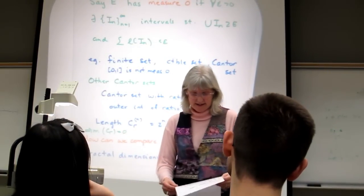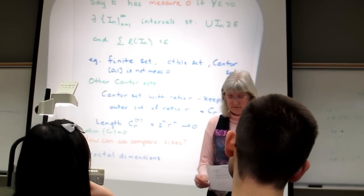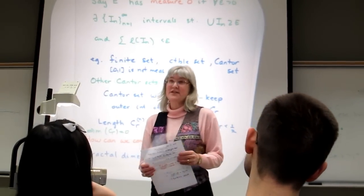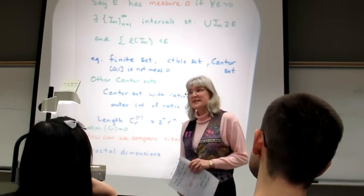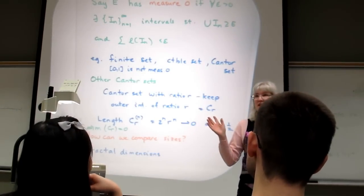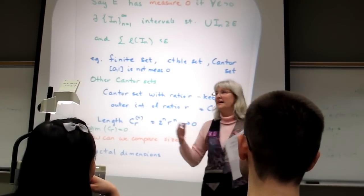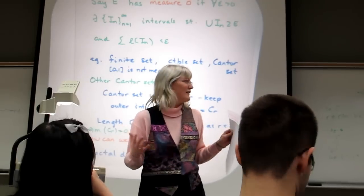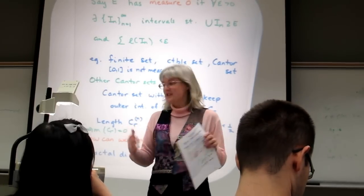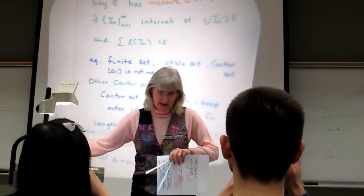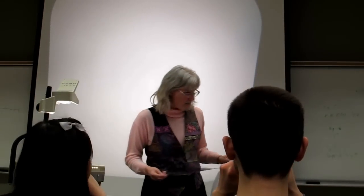Intuitively, if instead of keeping the outer third we keep only the outer quarter each time, that feels like a smaller set because we're keeping less at each step. But we're not able to see this difference through standard notions of size — not by cardinality, not by topology, not by Lebesgue measure. This is where fractal geometry becomes useful, through so-called fractal dimensions.